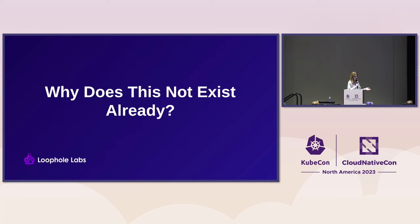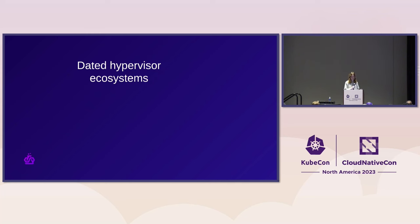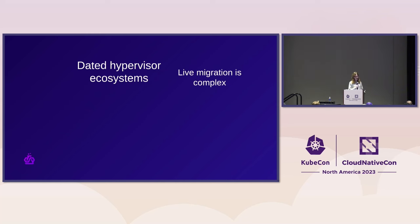Before we do that, let's ask ourselves why this doesn't exist yet. A lot of it has to do with the data storage and riser systems — these things have been around for decades and have accumulated cruft and are kind of hard to use. Live migration in particular — the thing that allows you to move from A to B — is extremely complicated. It's a whole process you need to set up and optimize for, and it's also very risky. If it breaks, you might not be able to resume the VM again.